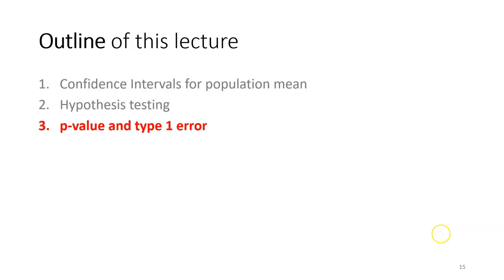That covers the basics of hypothesis testing so far. If you don't fully understand yet, that's okay — we are only halfway through. We stopped at the concept of the limit. In the next lecture we will discuss how we decide the limit, but first you need to understand what is the p-value and Type 1 error, which will be explained in the next lecture.